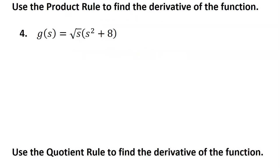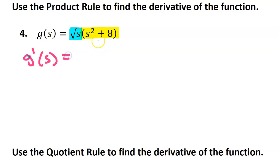We can use the product rule to find the derivative of this function because we can look at function g as the product of this part times this part. So as I use the product rule, g prime of s is going to equal — first I'm going to take the derivative of the first part. But this is the same as s to the one-half power. So using the power rule, I'm going to put that one-half in the front, and then reduce the exponent by one, so this will become negative one-half.